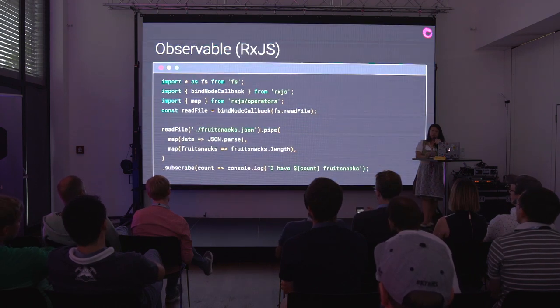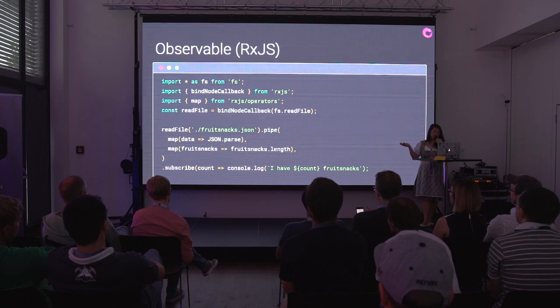Here's an example using observables doing the same thing as in all the other files. We're using bindNodeCallback to convert read file into a function that returns an observable, then mapping the values we get out of that and logging the count to the console.